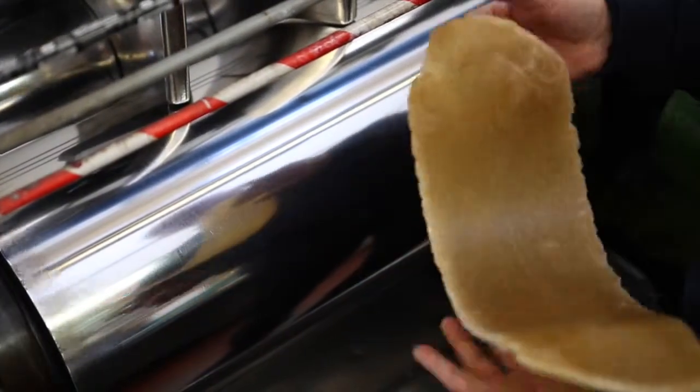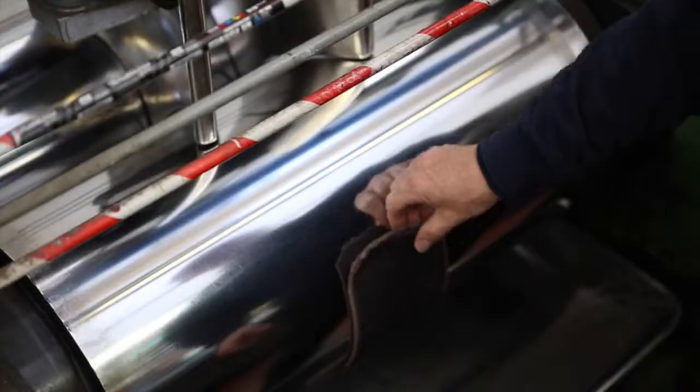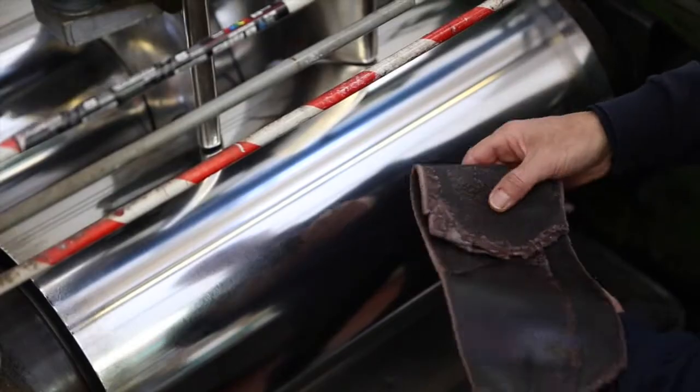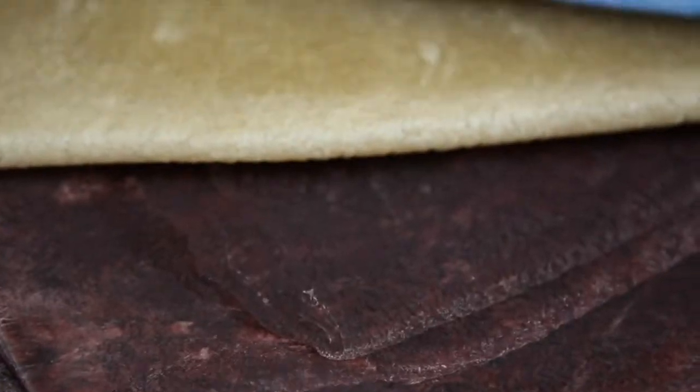Intricate patterns like our tortoiseshells and horns contain multiple colours and in these instances each part of the acetate must be created individually.